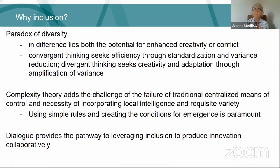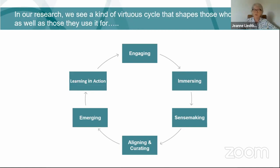Complexity theory tells us we need two things: we need to create simple rules so that we can push decision-making to local levels and coordinate the locals across, and we also need to create the condition for something called emergence. In complexity theory, emergence represents the ability for a collective to come together and produce higher-order solutions that none of them were capable of producing independently. This concept of emergence — and the way design thinking facilitates conditions for it — is really the magic of this technology as we look at inclusion.